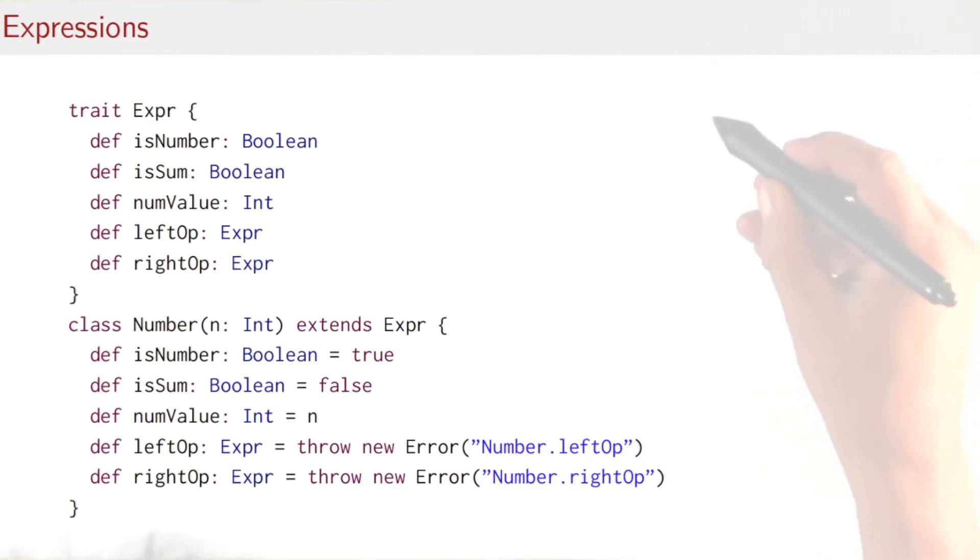So here you see I have my class hierarchy. I have an expression and then I have two subclasses Number and Sum. Now for a complete functionality of exploration, if I look at an expression I would like to know is it a number or is it a sum? And that's done by the first two methods here, isNumber and isSum.